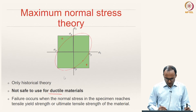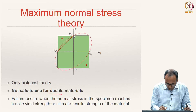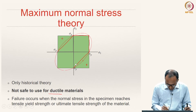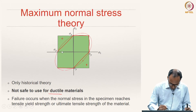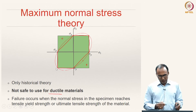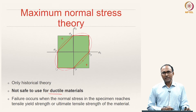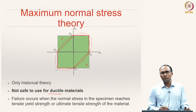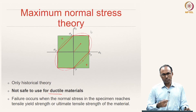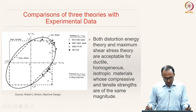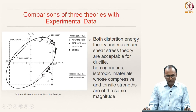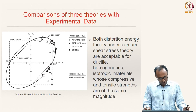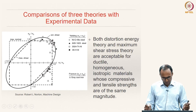The red line represents the distortion energy theory and the boundary drawn in red represents the maximum shear stress theory. One can calculate factors of safety graphically using these boundary lines, which is an acceptable approach. This graph shows the relative merits of distortion energy theory and maximum shear stress theory over maximum normal stress theory using experimental data.